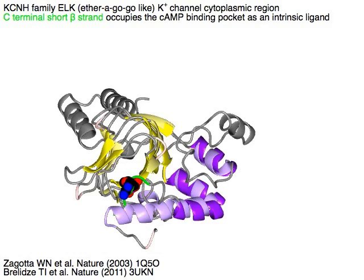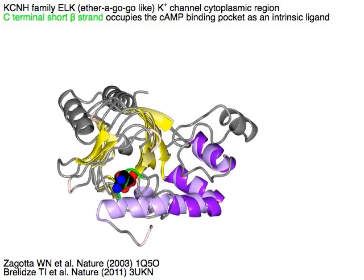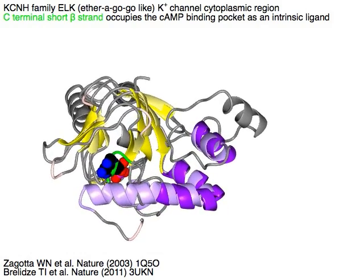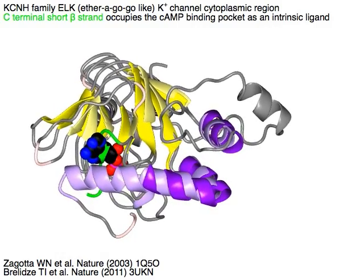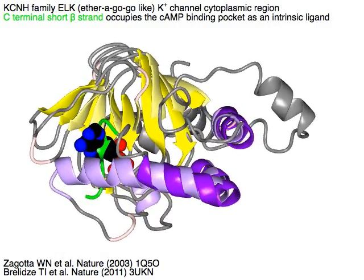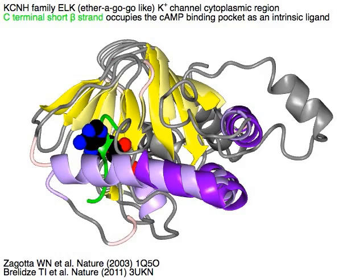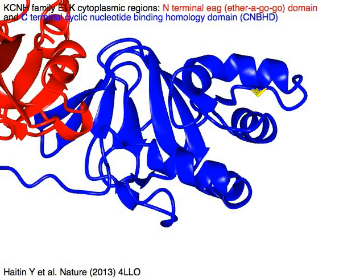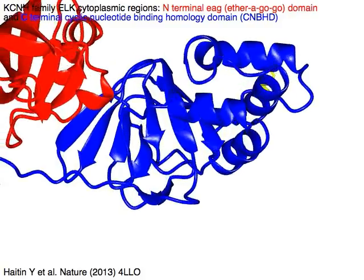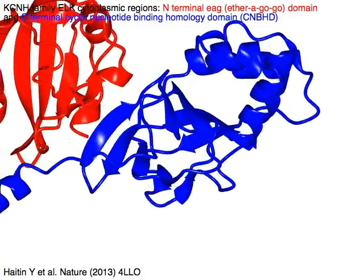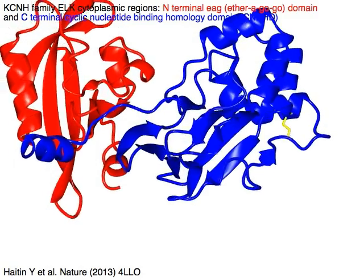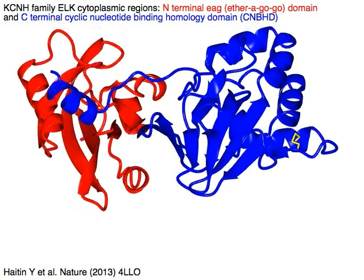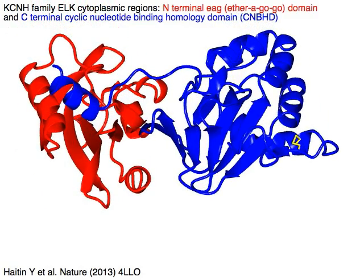In the KCNH family ELK (Etherogogo-like K+ channel) cytoplasmic regions, a C-terminal short beta-strand in green occupies the cap binding pocket of the beta-roll as an intrinsic ligand. The N-terminal Etherogogo domain is in red and the C-terminal cyclic nucleotide binding homology domain (CNBHD) is in blue.